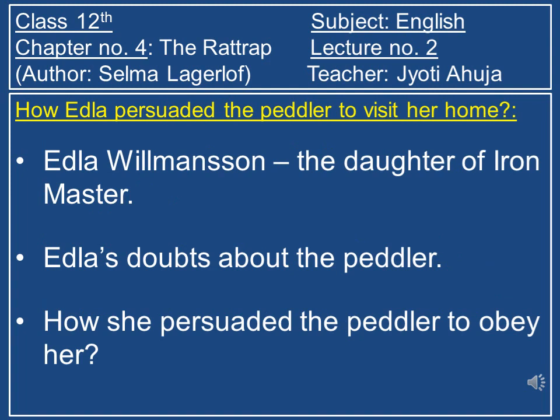After listening to the refusal, the Ironmaster went back home and sent his daughter, whose name was Edla Wilmensan, to persuade the peddler to visit their home. It was not more than half an hour before they heard the sound of carriage wheels outside the forge. A new guest came in — this time not the Ironmaster, but he had sent his own daughter, hoping she would have better powers of persuasion than her father to convince the fellow to visit their home.